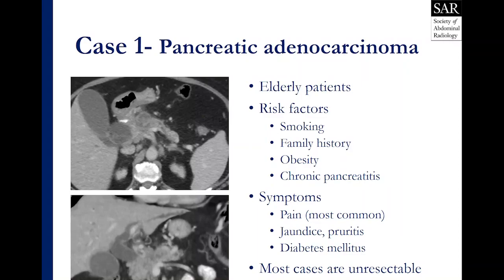We see these mostly in elderly patients. There are a number of risk factors for PDAC, including smoking, family history, obesity, and chronic pancreatitis. Patients will often present with vague symptoms including epigastric pain, pain radiating into the back, gnawing upper abdominal pain — generally, pain is the most common symptom. Some patients will have jaundice and pruritus, and others will have secondary diabetes.